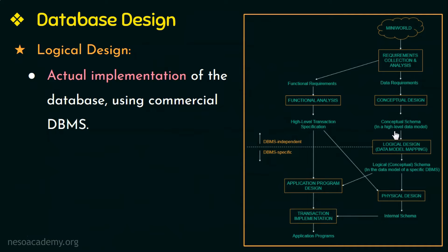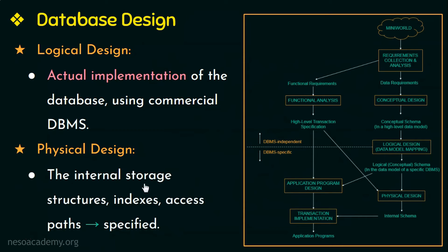So here we had a conceptual schema in the high-level data model which is transformed to a database schema in the implementation data model. The last step is the physical design, in which the internal storage data model is defined. So this is a very simple overview of the database design process.